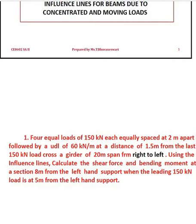Based upon the given data, first we have to place the load in a simply supported girder. The total length of the girder is 20 meter span. The traverse of the load is from right to left. The 4 equal loads are spaced at 2 meter apart, followed by a UDL at a distance of 1.5 meter from the last 150 kilo Newton load. The leading 150 kilo Newton load is at 5 meter from the left hand support, and the section is at 8 meter from the left hand support.